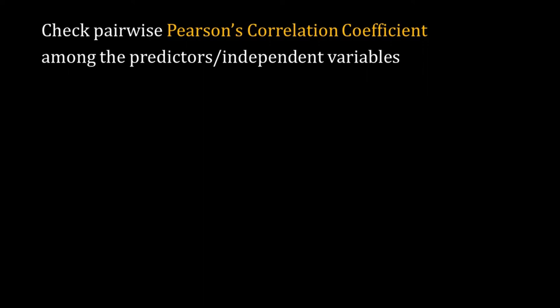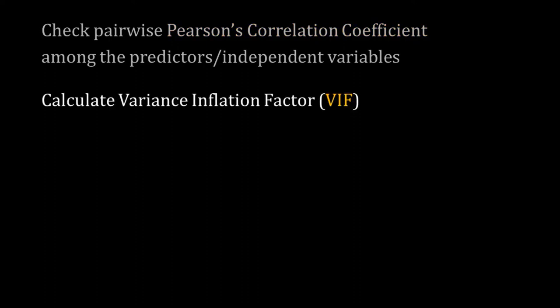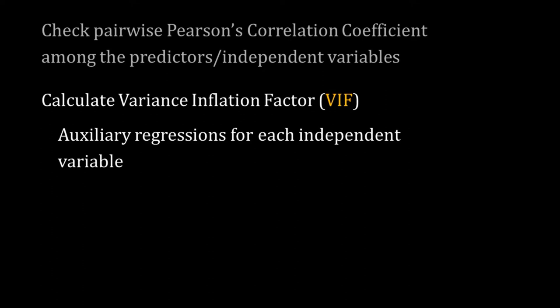Multicollinearity is a problem, but how can we detect it? First, check whether your data is well dispersed — if the values of a particular predictor are very close to each other, you have trouble. Second, check the pairwise Pearson correlation coefficient among the predictors; if correlations are very high, close to one, we may have trouble. A much better metric is VIF — Variance Inflation Factor. To calculate VIF for each independent variable, we do some additional regression.